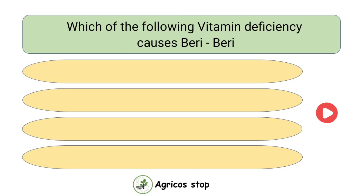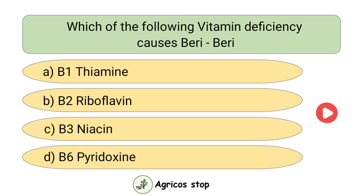Which of the following countries has the highest irrigation efficiency? Options are USA, China, India, and Israel. The answer is Israel. Israel has the highest irrigation efficiency.